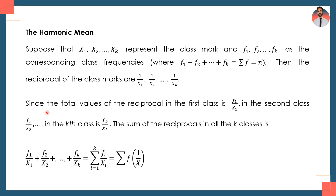The reciprocals of the class marks are 1/x1, 1/x2, ..., 1/xk. The total values of the reciprocals in the first class is f1/x1, because you multiply the relative frequency by the reciprocal 1/x1. In the second class it is f2/x2, and in the kth class it is fk/xk. The sum of the reciprocals across all k classes is summation of fi/xi for i = 1 to k.